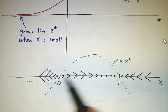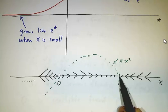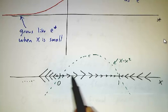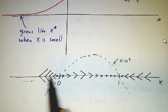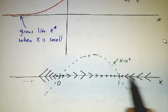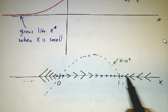And here's the curve for f = x - x². So between 0 and 1, x - x² is positive. That means the derivative of x is positive. We're being driven to the right. When x is less than 0 or when x is bigger than 1, we're being driven to the left because x - x² is negative.